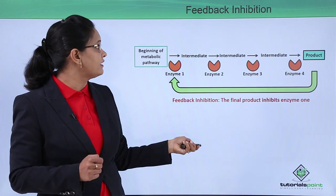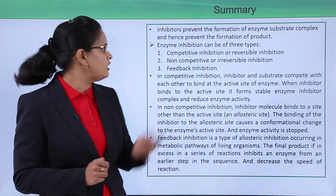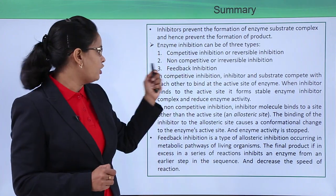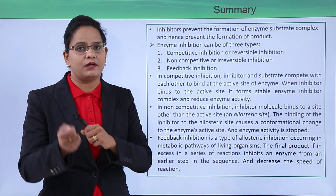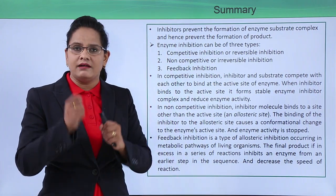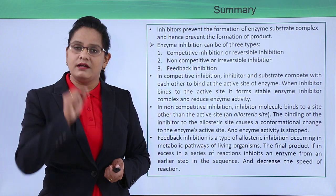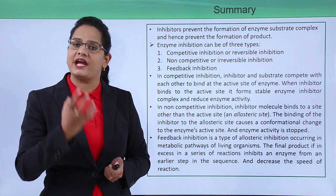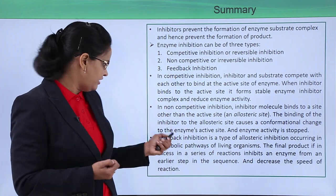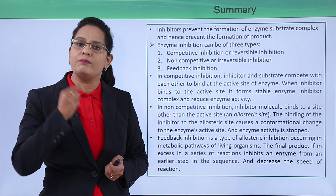To summarize: inhibitors prevent the formation of the enzyme-substrate complex. There are three types of inhibition. In competitive inhibition, the inhibitor and substrate compete for the active site, forming an EI complex; increasing substrate concentration can reverse this. In non-competitive inhibition, the inhibitor binds to the allosteric site and decreases activity by changing the conformation of the active site — this is irreversible. Feedback inhibition is a type of allosteric inhibition used by biological cells to maintain homeostasis.